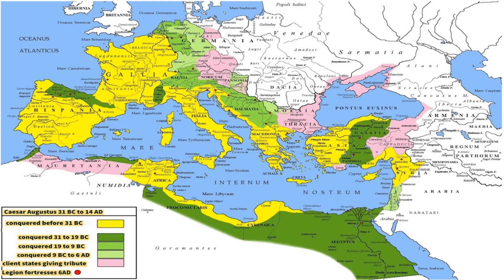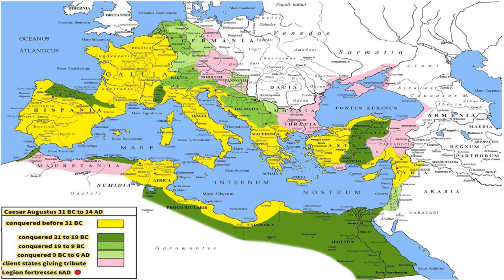Looking at this map, we have different time zones, eras and the evolution of Roman architecture and civilization, which was founded by Caesar Augustus, best known as Octavian, who lasted from 27 BC to 14 AD till his death. He conquered so many places. As you can see in the yellow, dark green, light green and pink, we have all of the places marked.